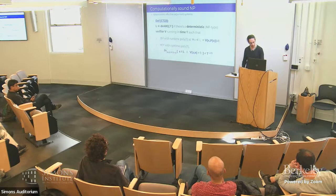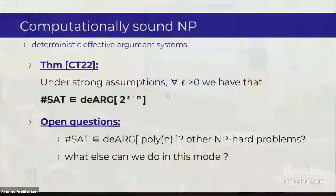Under strong assumptions, you can solve SharpSAT more quickly in computationally sound NP. We believe SharpSAT cannot be solved by a non-deterministic machine in time 2^(εn) for any ε > 0. But under strong assumptions in this computationally sound NP, you can beat that — you can solve SharpSAT in time 2^(εn) where ε is as small as you want. Taking inspiration from classical results in crypto like Kilian, maybe we can achieve polynomial time too. This is a new relaxed notion of NP that allows bypassing certain barriers and obstacles.